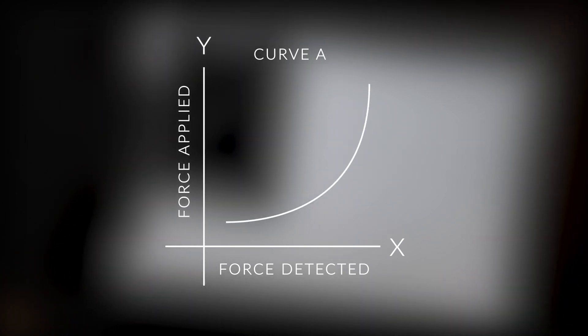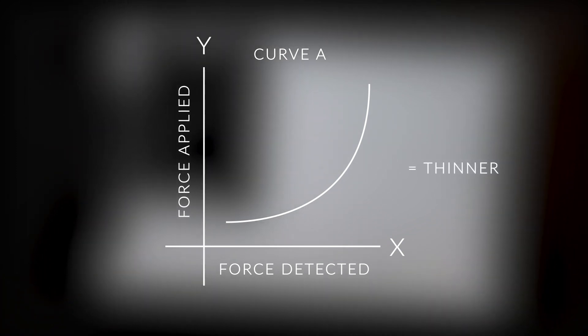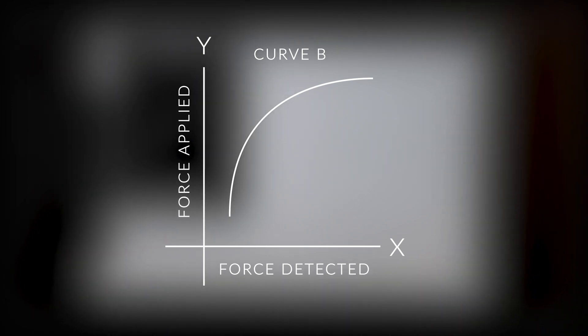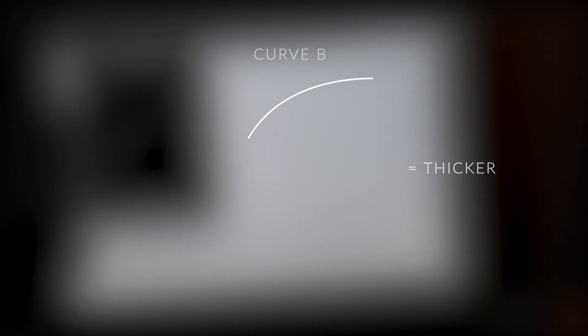As an example, this curve A would mean that my strokes will come out thinner because the overall force applied is lower. The opposite of that would be this curve, we'll just call it curve B for now, and here the strokes will come out thicker because the overall force applied is now higher.